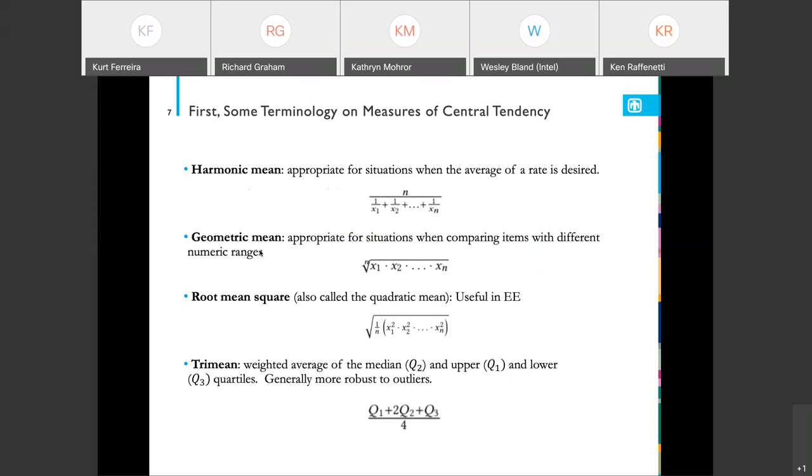And lastly, we're going to be looking at the trimean. The trimean is a weighted average of the median value, which is Q2, and then we take the upper and lower quartiles, and we sum all that up and divide by four. The trimean is generally more robust to outliers because we're using quartiles.